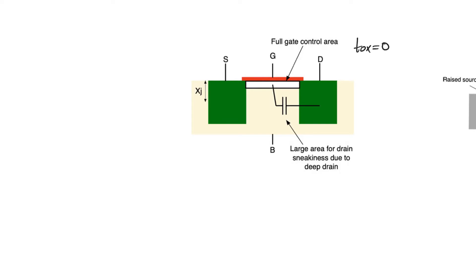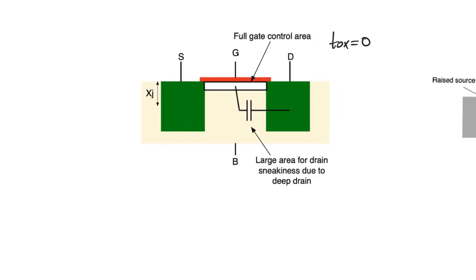The gate is smack in control, smack in touch with the channel. Does that remove drain-induced barrier lowering? The answer is obviously not, because what the problem again is that the depth of the drain XJ is now very high and the drain is in contact with a large chunk of the body of the transistor. So if this is the depletion region the drain still has plenty of space and area through which to couple to the channel.